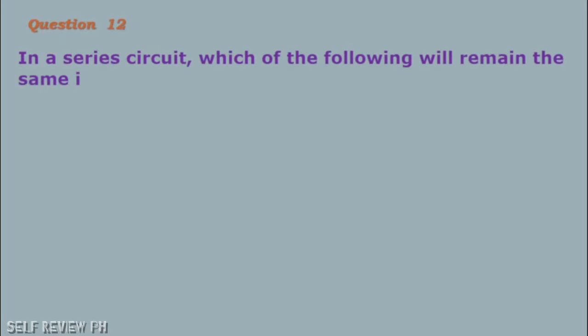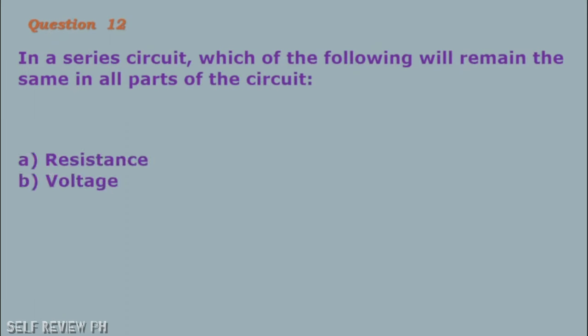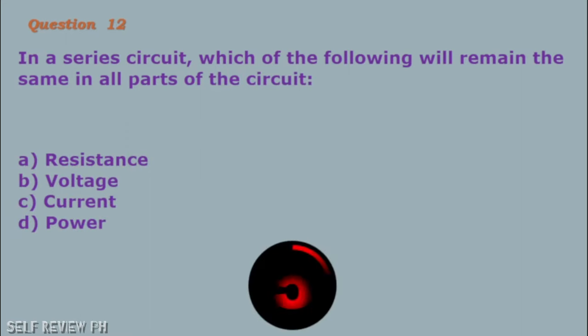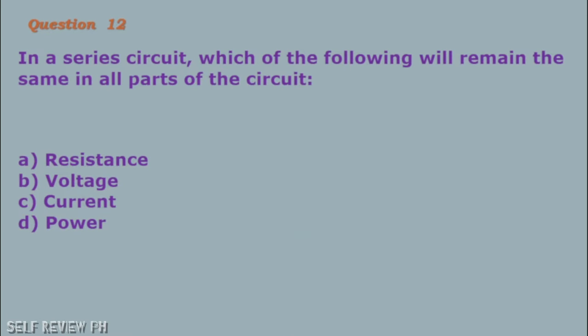Question number 12: In a series circuit, which of the following will remain the same in all parts of the circuit? A. Resistance B. Voltage C. Current D. Power. The correct answer is letter C, current.